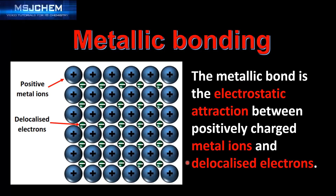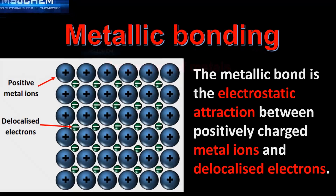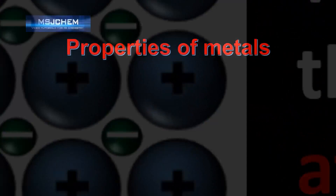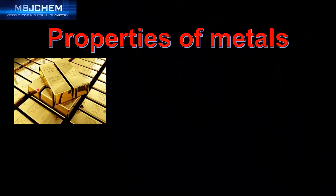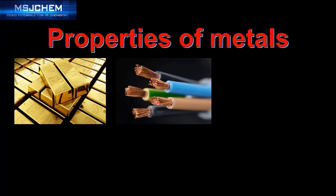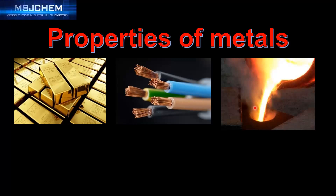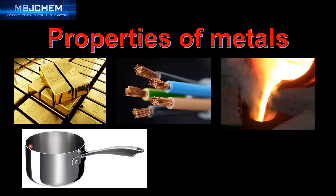Next we look at how the structure of a metal accounts for its properties. The properties of metals are: they are shiny, they are ductile, they can be made into wires, and they are also good conductors of electricity. They have high melting points.